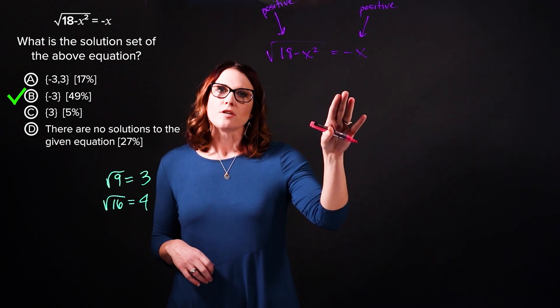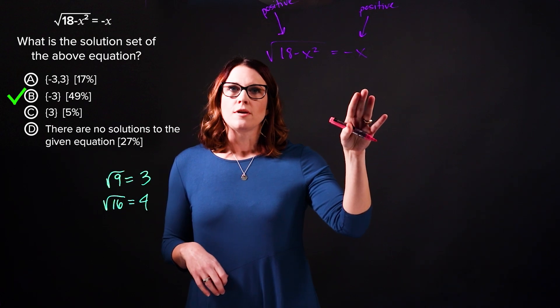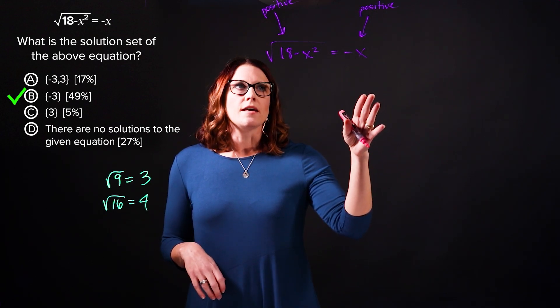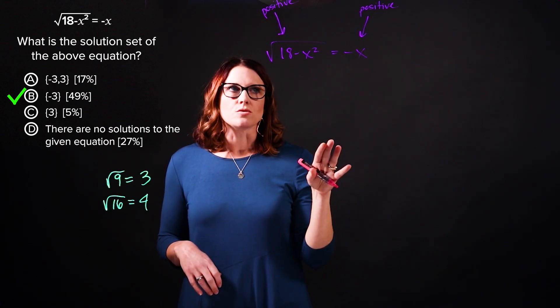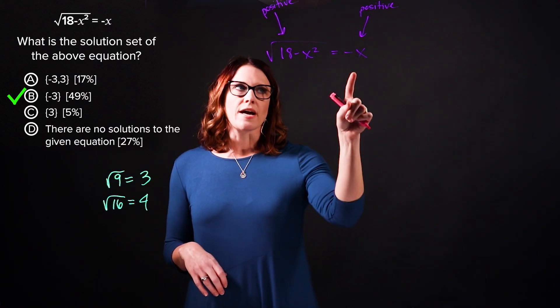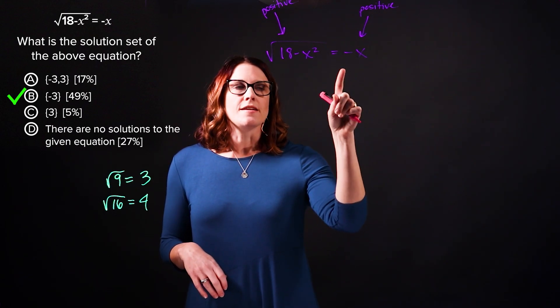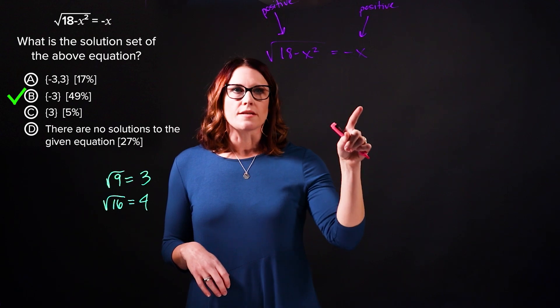So if the right side of the equation had a negative value, say negative 9, then this equation would have no solutions. However, we have negative x over here. Negative x is not always negative.